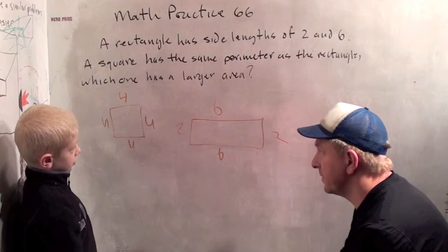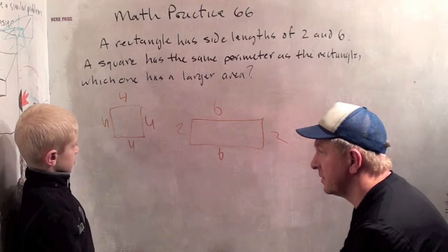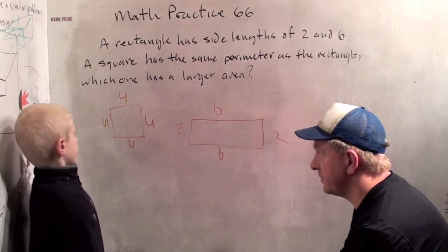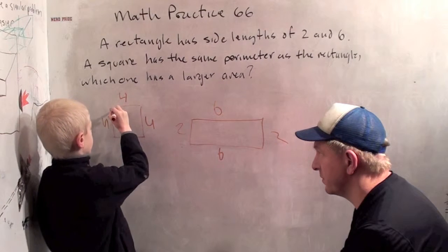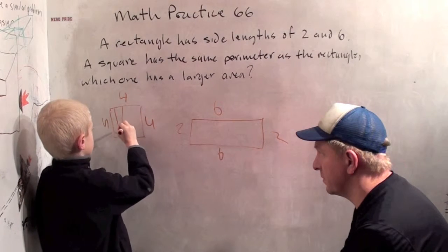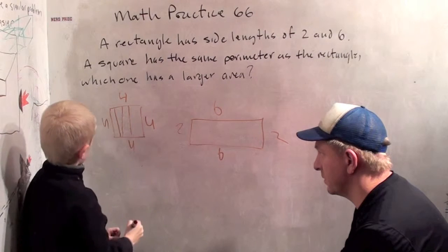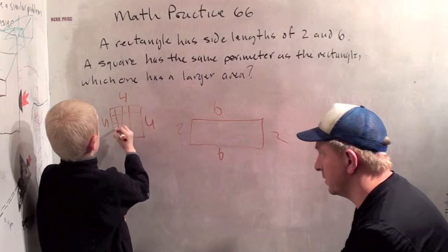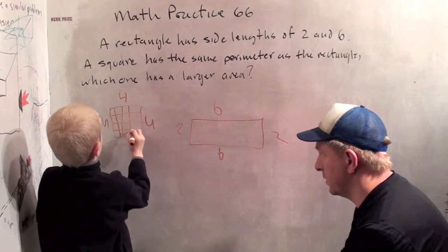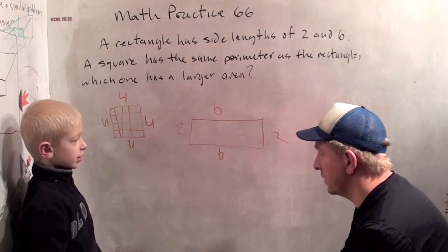Now, which has a larger area? Yeah, which has a larger area? For this one, we need to draw 4 squares on this side. So now 4 squares on this side. So this area is 16. Okay, very good.